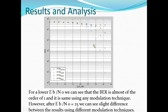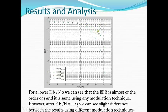Here we can see the results. For a lower Eb/N0 value, the BER is almost of the order of 1. However, after an Eb/N0 of around 25, you can see a slight difference between the results using different modulation techniques. We can clearly see that OFDM using BPSK has a lower bit error rate for a given Eb/N0 than all the other three. Between QAM-8 and QAM-16, QAM-8 has a lower bit error rate than QAM-16. For QPSK, the bit error rate remains almost constant throughout with just slight fluctuations.